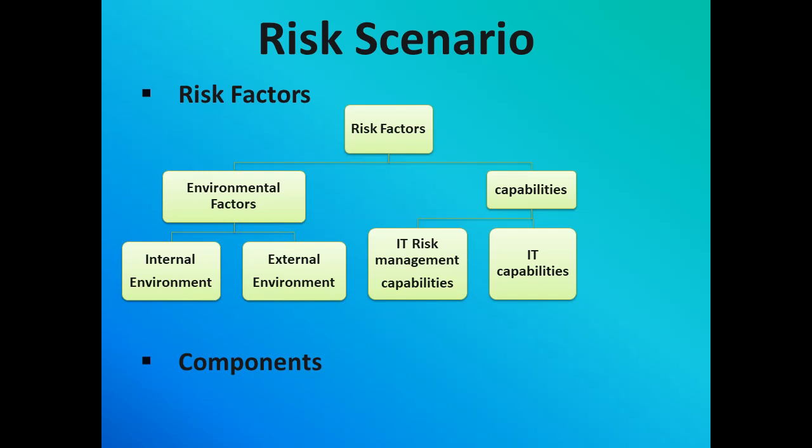Under capabilities, there are IT management capabilities and IT capabilities, referring to how well the enterprise manages IT-related activities. These can be distinguished in line with the ISACA framework, which has three major components: IT risk management capabilities — how mature the enterprise is in performing risk management; IT capabilities — how good the IT processes are as defined in COBIT; and IT-related business capabilities expressed through the VAL IT processes.